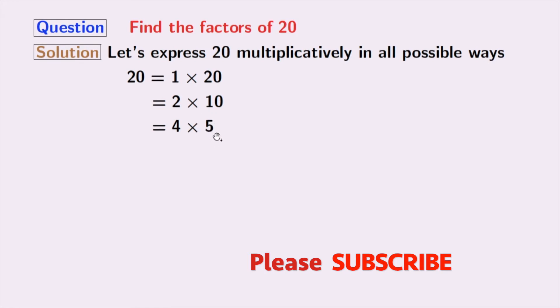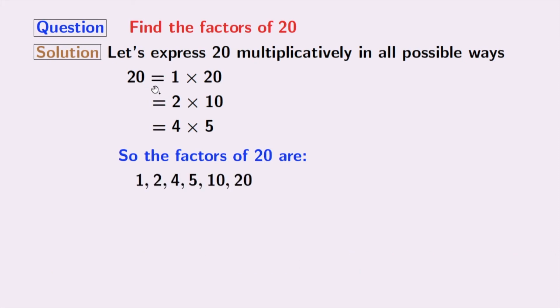Now look, we have already obtained 5, so we will stop here. We have got all the factors of 20 which are 1, 2, 4, 5, 10, and 20.